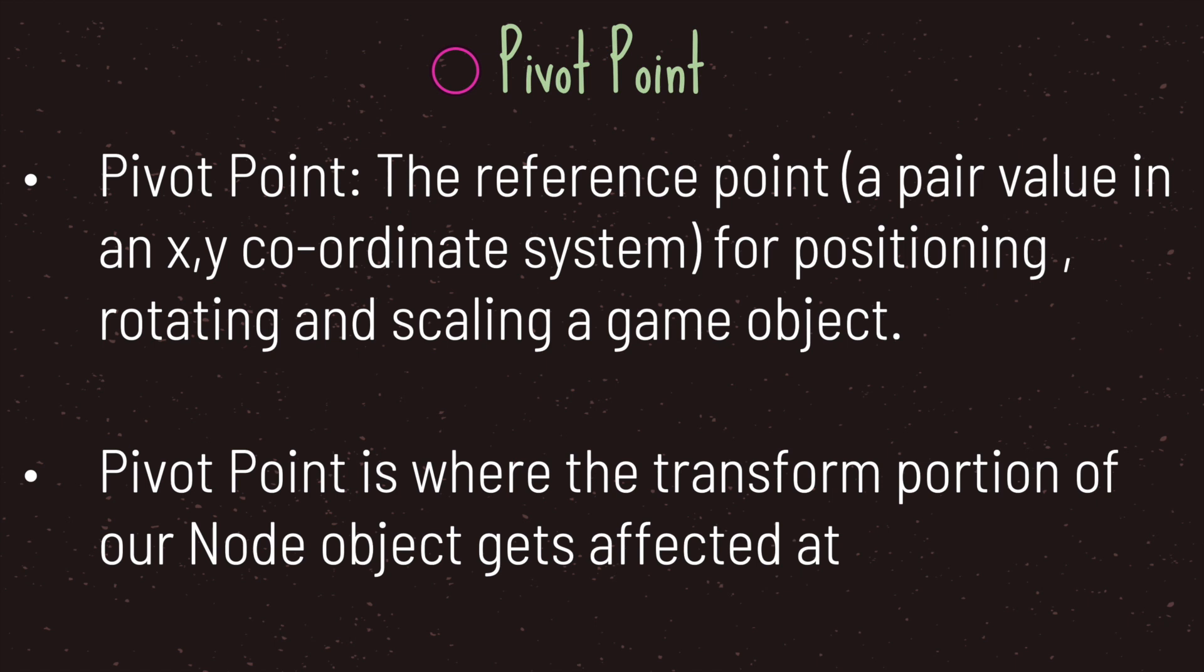Now a pivot point is a reference point for positioning, rotating and scaling a game object. This reference point will come in a pair value that represents both the X and Y values in an X and Y coordinate system.